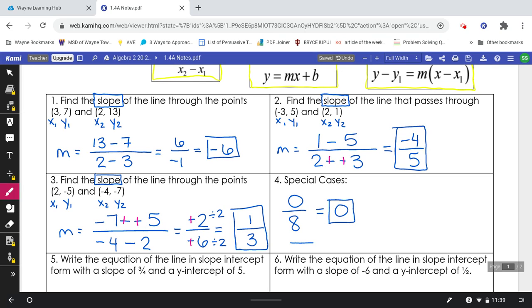A slope of 0, if you remember, looks like this. It's a horizontal line.